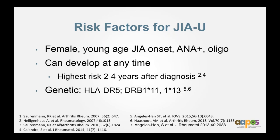All comers are at risk for JIA-associated uveitis. Many studies have tried to identify the actual risk factors, and there is no consensus. But the data suggests that being female, being very young at JIA onset, being ANA positive, and having the oligoarticular subtype put you at higher risk. The highest risk is in the first two to four years after JIA diagnosis. There are some genetic risk factors listed, but they are by no means explanatory of all patients with JIA-associated uveitis.